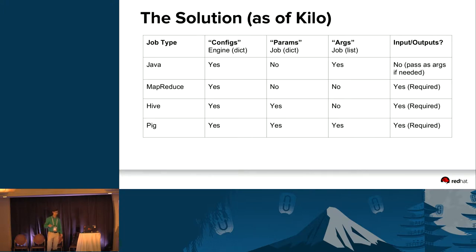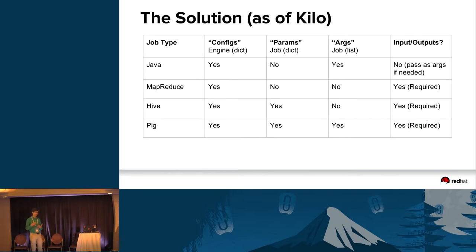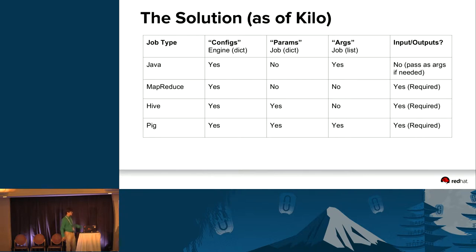The three categories were: configs — a dictionary processed by the engine, for example the number of mappers in a Hadoop job; params — another dict processed by the job itself, named arguments you pass in that you've specifically written into your job; and args — also processed by the job, but taking the form of a list, referenced only positionally. Different job types — Java, MapReduce, HivePig, etc. — can use different sets of these. There's also a complication with input and output data sources: some job types take top-level input/output data sources as arguments, some don't.